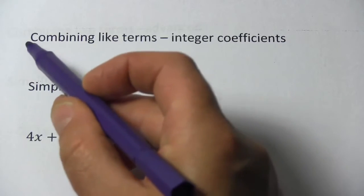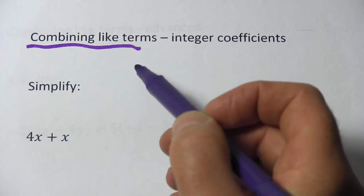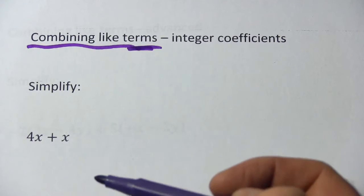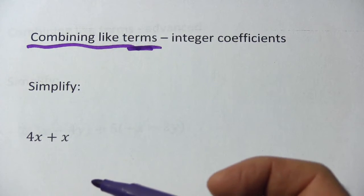In these problems we're doing something called combining like terms. A term is just a chunk that you see in an expression.